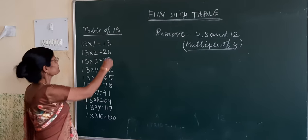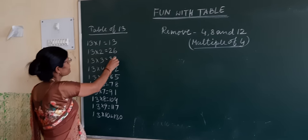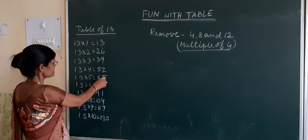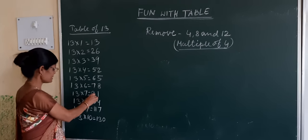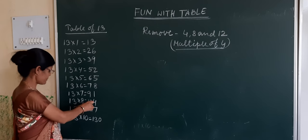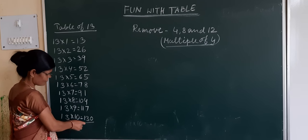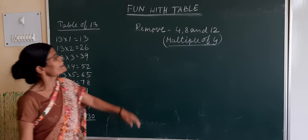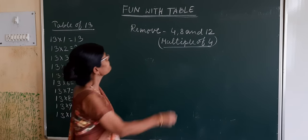Now see the table of 13: 13 x 1 = 13, 13 x 2 = 26, 13 x 3 = 39, 13 x 4 = 52, 13 x 5 = 65, 13 x 6 = 78, 13 x 7 = 91, 13 x 8 = 104, 13 x 9 = 117, 13 x 10 = 130.